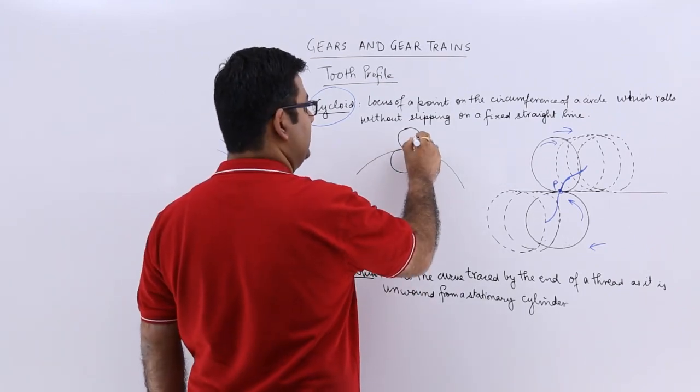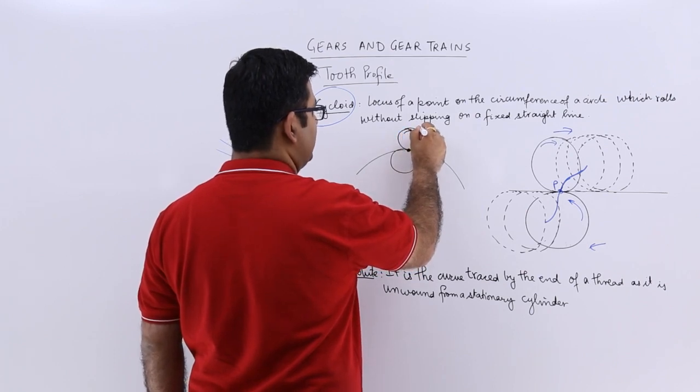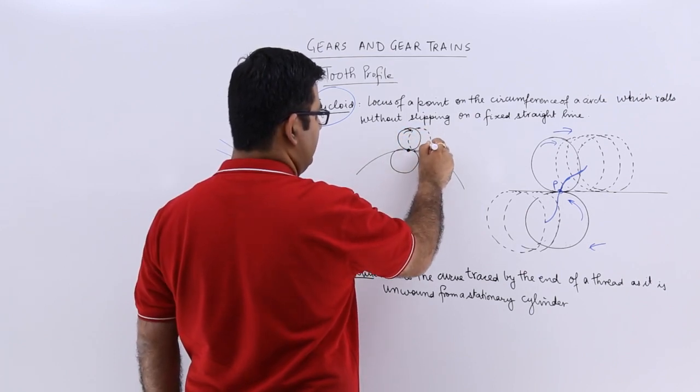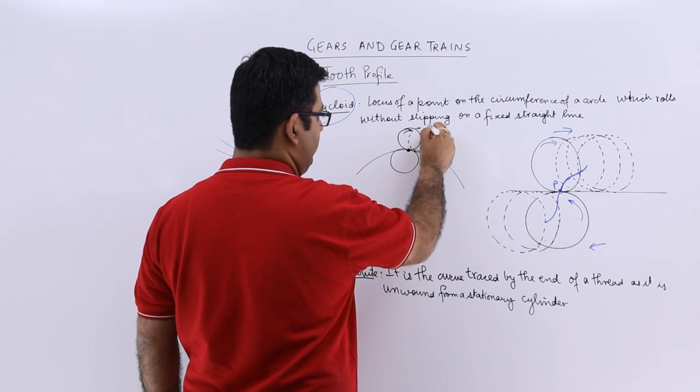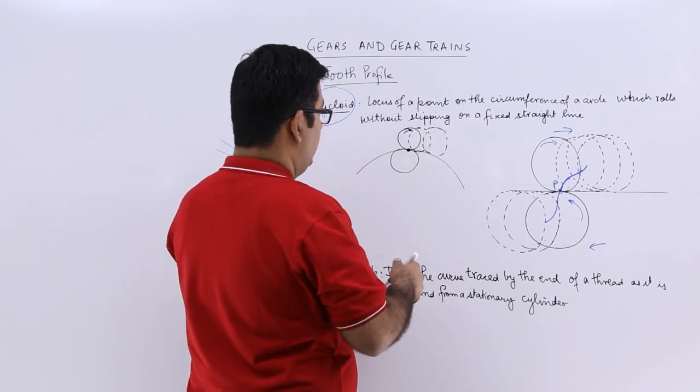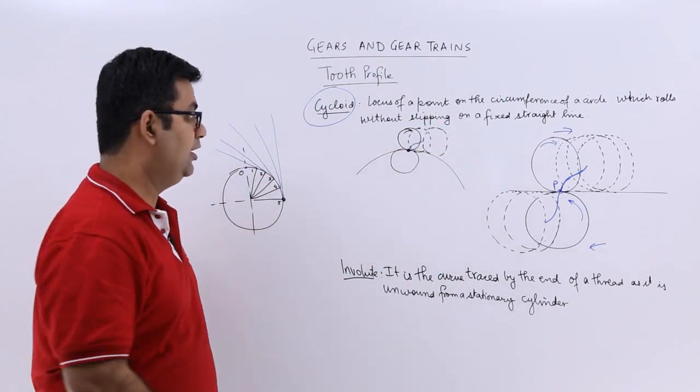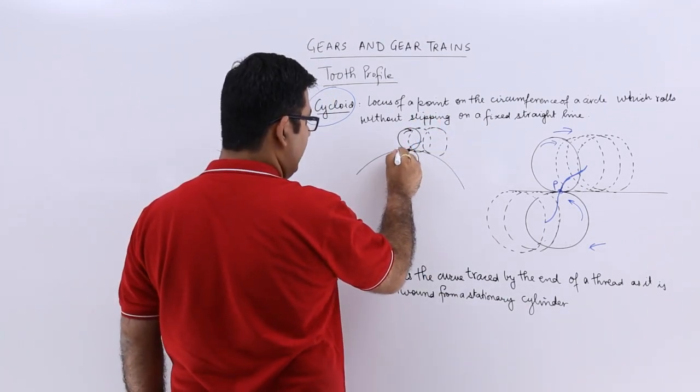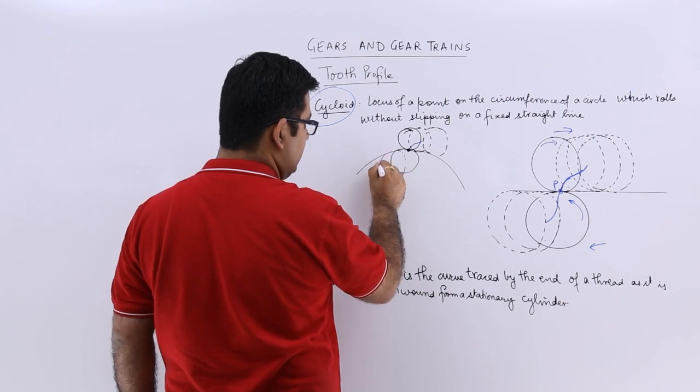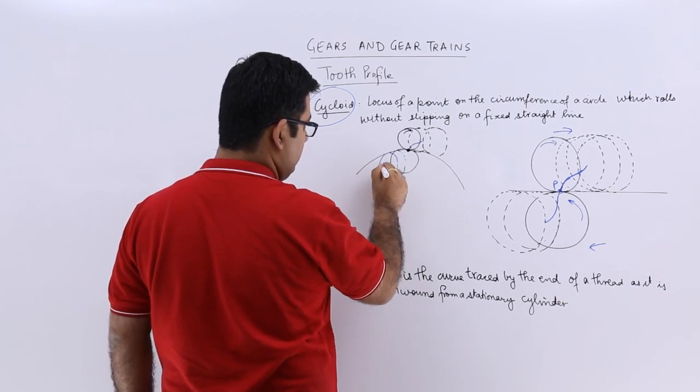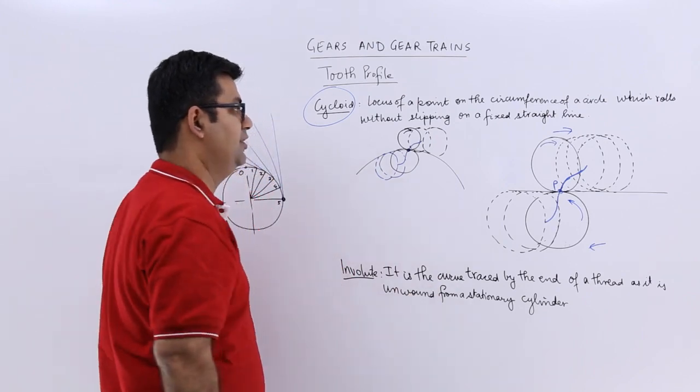Now what is happening? This point is still rolling in that direction. So you will have these different positions. You get a profile like this. And then you have the bottom circle rolling in such a direction and you get a profile like this.